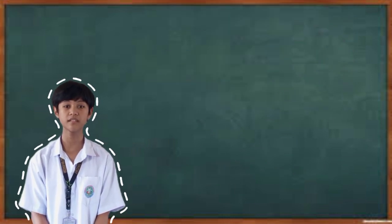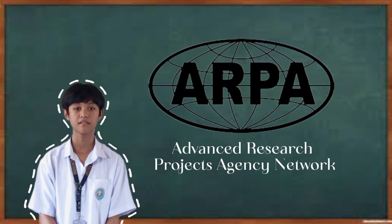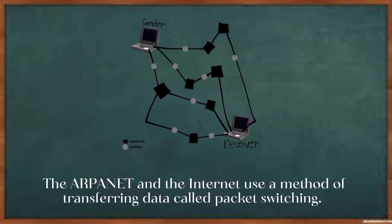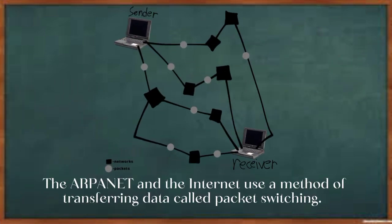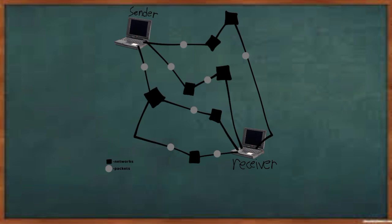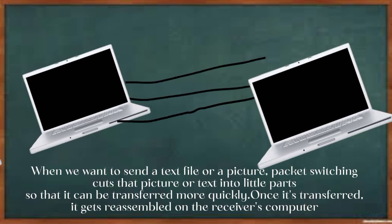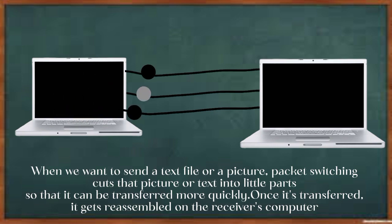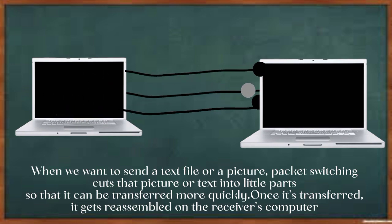To foster communication among scientists, they built the ARPANET. The ARPANET and the Internet use a method of transferring data called packet switching. When we want to send a text file or a picture, packet switching cuts that picture or text into little parts so that it can be transferred more quickly.